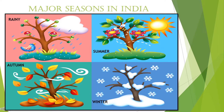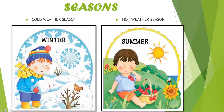Now students, the major seasons recognized in India are: cold weather season, that is winter; hot weather season, that is summer; southwest monsoon season, that is rainy; and the season of retreating monsoon, that is autumn. Now let's know about these seasons in detail.